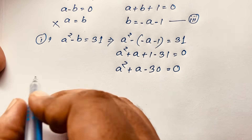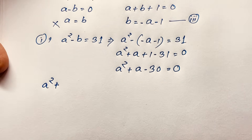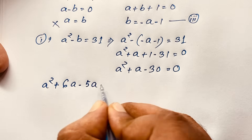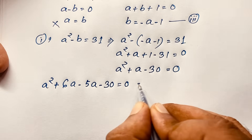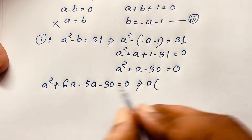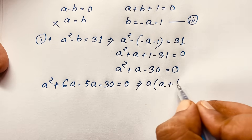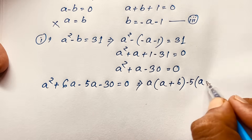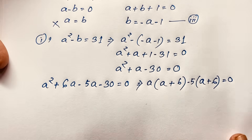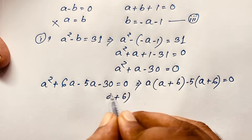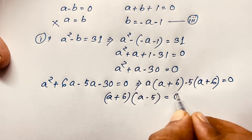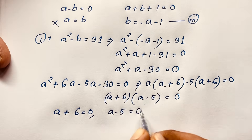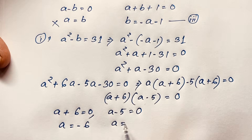Now I do middle-term factoring. 30 equals 6 times 5, so it will be A squared plus 6A minus 5A minus 30 equals 0. Taking A as common gives A times A plus 6, then minus 5 is common giving minus 5 times A plus 6 equals 0. So A plus 6 times A minus 5 equals 0. First case A plus 6 equals 0, other case A minus 5 equals 0. Therefore A equals minus 6 or A equals plus 5.